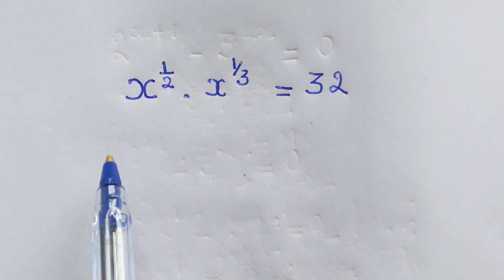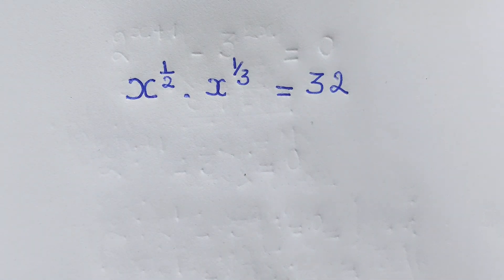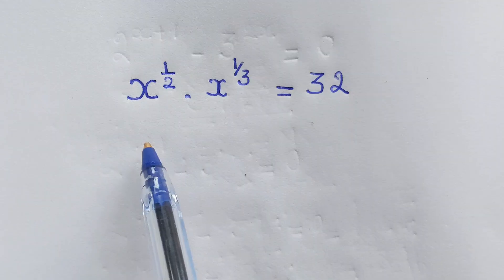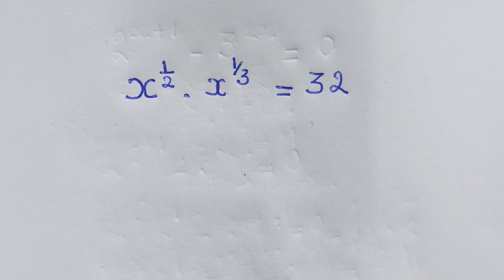All right, welcome to this platform and in today's video we have given question x power 1 over 2 times x power 1 over 3 equal to 32.